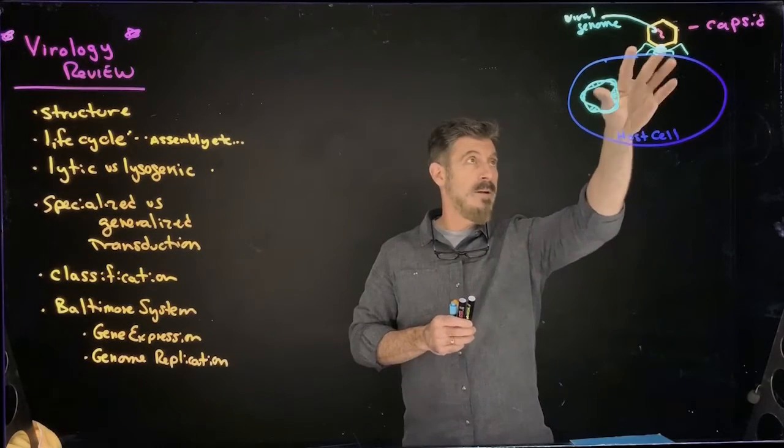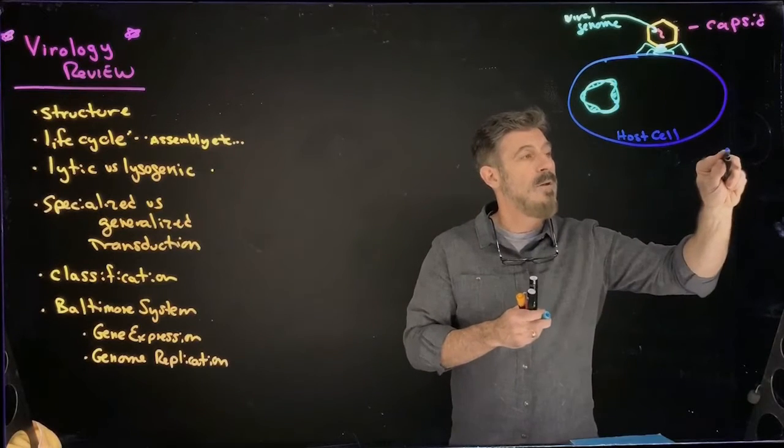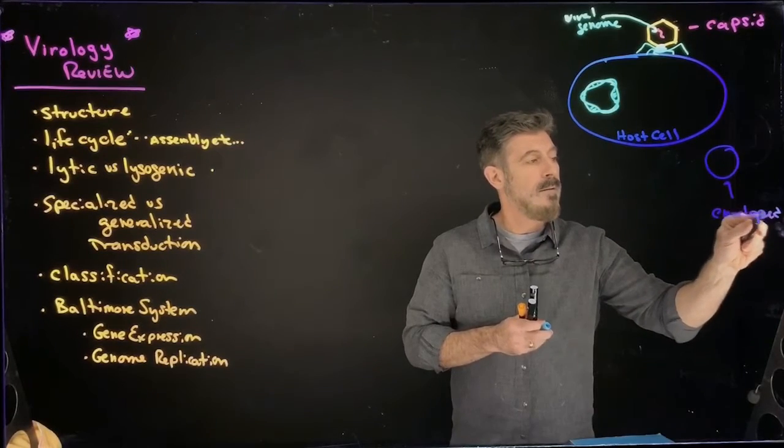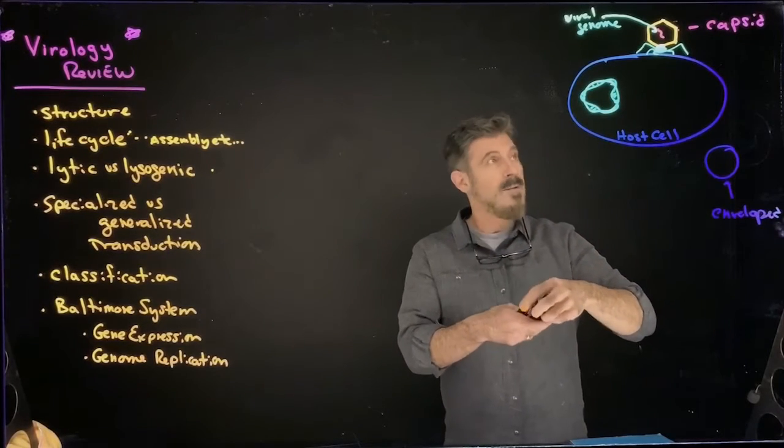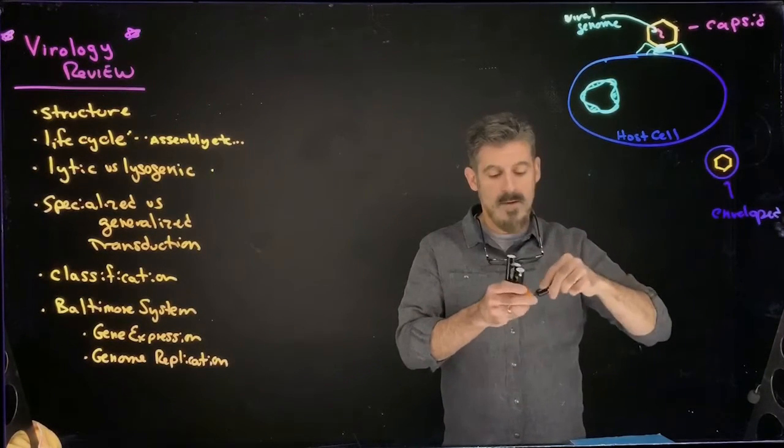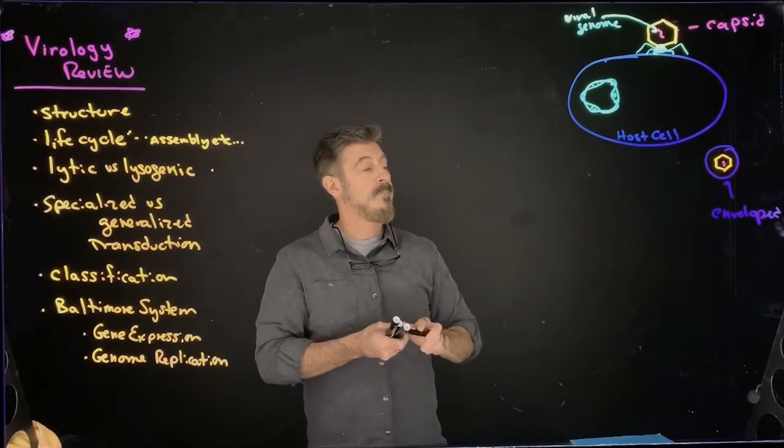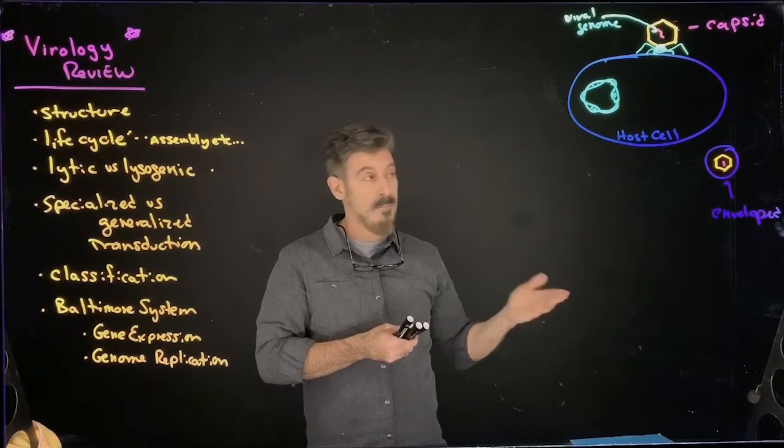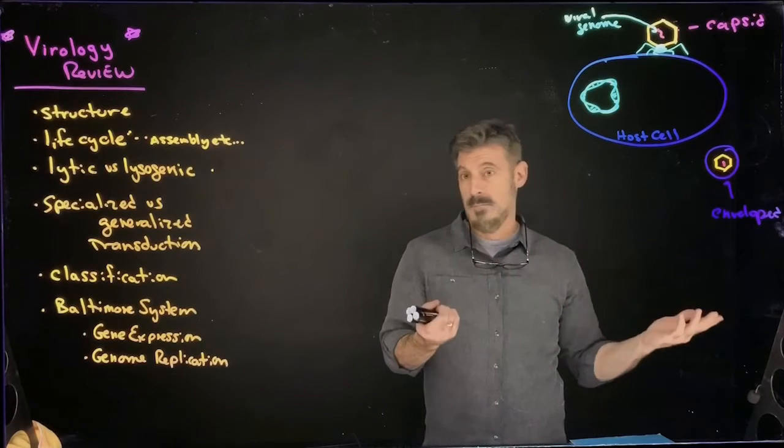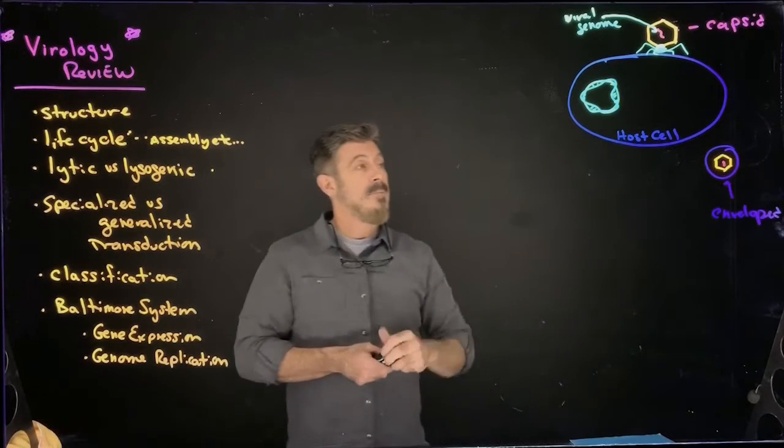The capsid could be naked like this one here, there's nothing around it, or a capsid could be enveloped. And that will lead into talking about some of the other parts of the life cycles as well. Here the viral particle is inside an envelope, which is like a cell membrane. And so this also helps disguise it from the immune system and it can help it attach to the cell.